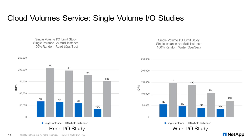This goes to show that cloud volumes and on-premises physical arrays behave the same. Importantly, a single instance is not capable of driving a volume to its end. The 1K random read shows 60,000 I/O from a single client versus over 200,000 I/O from multiple clients. At 8K we're at about 175,000 I/O from multiple clients and around 60,000 from one instance.